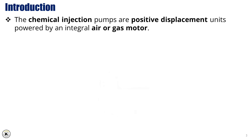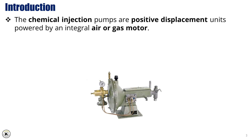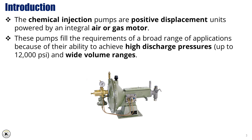The chemical injection pumps are positive displacement units powered by an integral air or gas motor. These pumps fill the requirements of a broad range of applications because of their ability to achieve high discharge pressures, up to 12,000 PSI, and wide volume ranges.